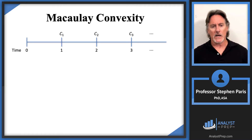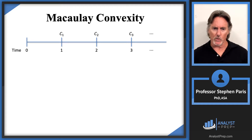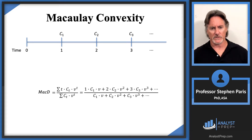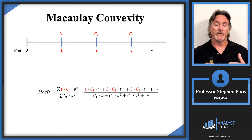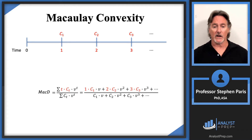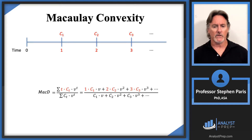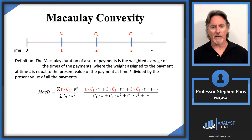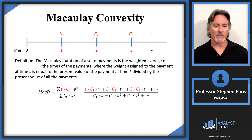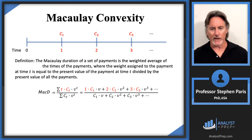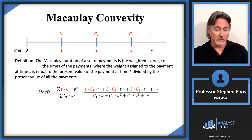Let's start with Macaulay convexity. I want to tie it back to Macaulay duration and recall how we would calculate the Macaulay duration of a set of payments. In the denominator we take the present value of the payments, and in the numerator we take the time of the payment, multiply that times the amount of the payment, and then discount it back. Technically, the Macaulay duration is a weighted average of the times of the payments where the weight assigned to the payment at time t equals the present value of the payment at time t divided by the present value of all payments.